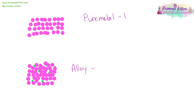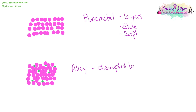In a pure metal we have layers, and these layers can slide. Because these layers can slide, a pure metal is very soft. An alloy has disrupted layers which cannot slide, and because they cannot slide it is very hard.